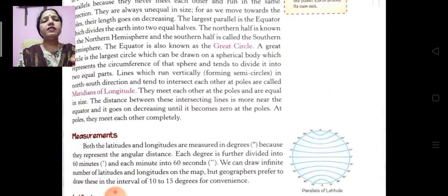So now here we will know about the meridians of longitudes. The lines which run vertically in north-south direction and tend to intersect each other at poles are called meridians of longitudes.